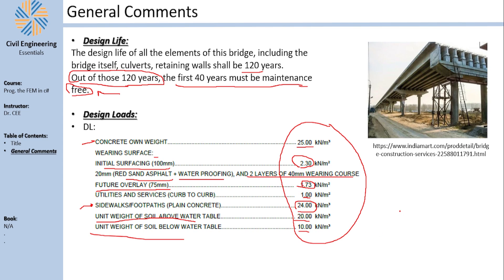Sidewalks and footpaths are going to be made of plain concrete with a defined density. The unit weight of soil above the water table is 20 kN/m³ and below the water table is 10 kN/m³, because there is an apparent unit weight for soil submerged underwater — it is lighter due to the submerged unit weight.